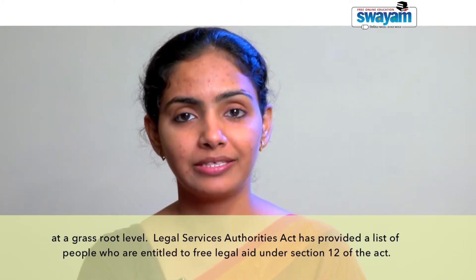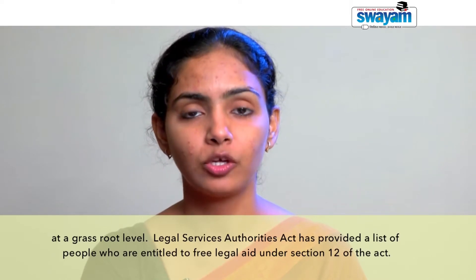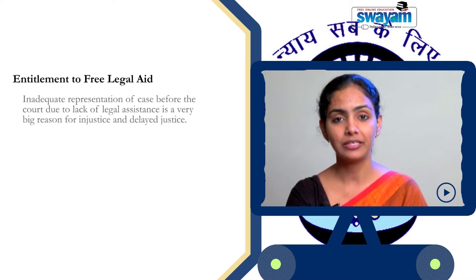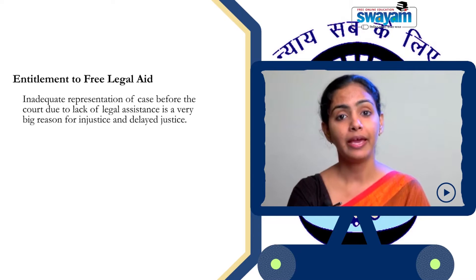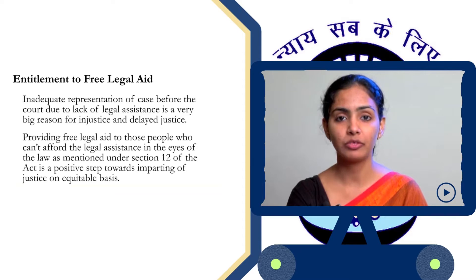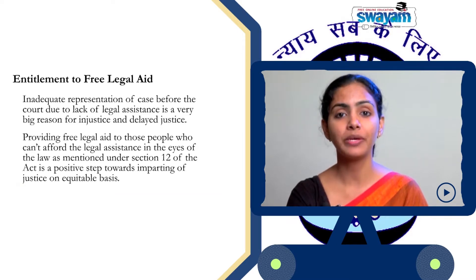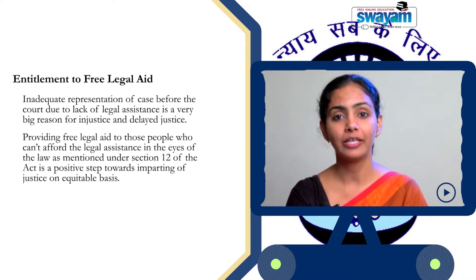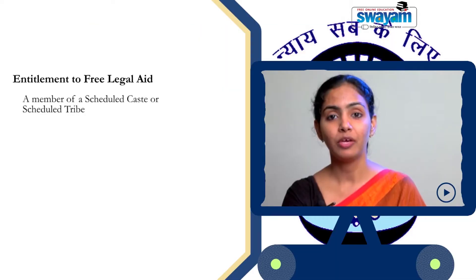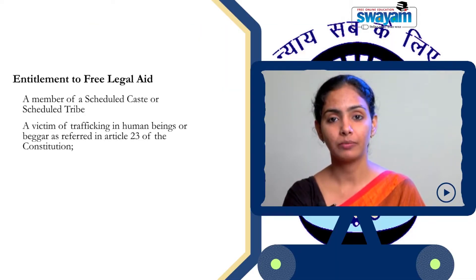The Legal Services Authority Act has provided a list of people entitled to free legal aid under Section 12 of the act. Free legal aid has been given a very broad meaning — it includes not only the free services of an advocate but also exemption from court fees and process charges. The people entitled include those of scheduled castes and scheduled tribes, victims of trafficking in human beings or beggars, women, and children.